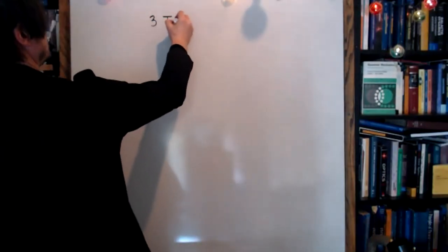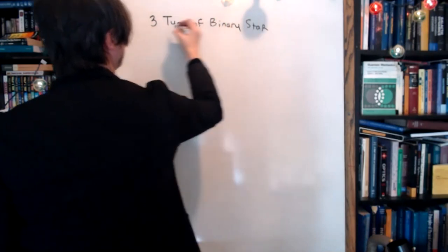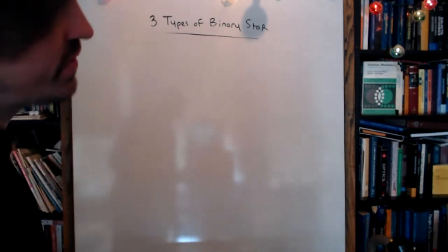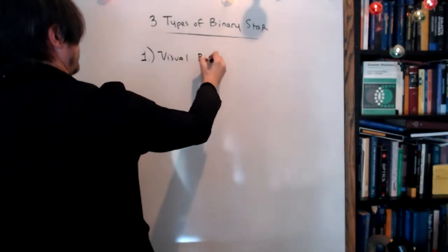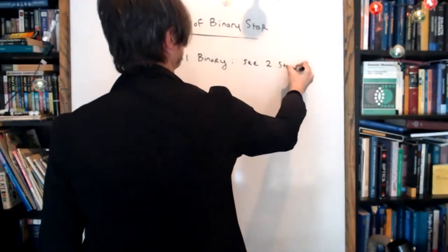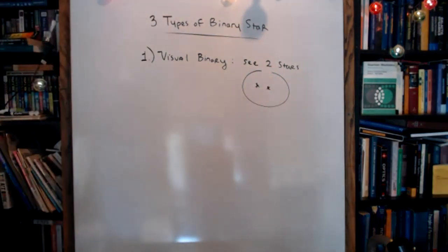Do you guys know what a binary star is? A binary star is two stars that are gravitationally bound to each other. There are three types of binary star we will study. The first is called a visual binary — that's when you can actually see the two stars and watch them orbit around each other. That type is quite rare.